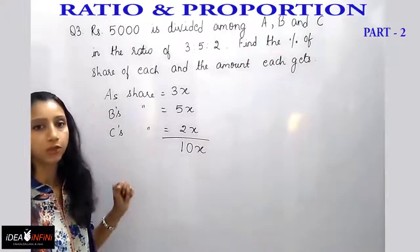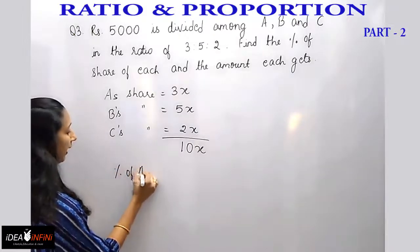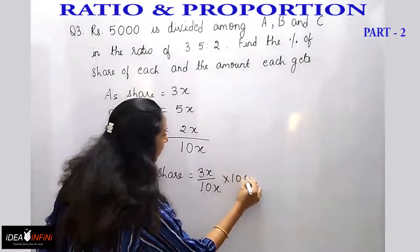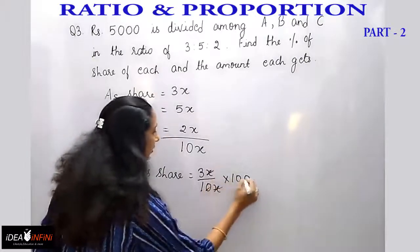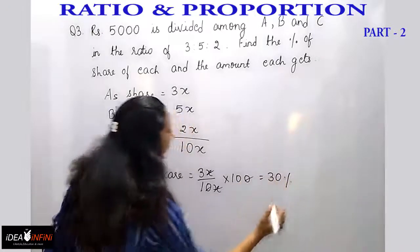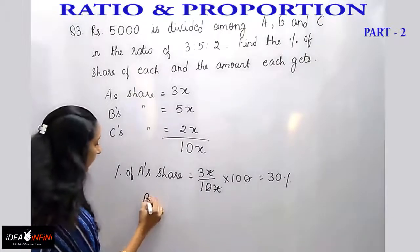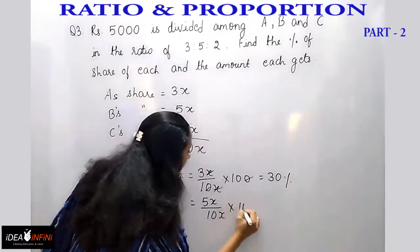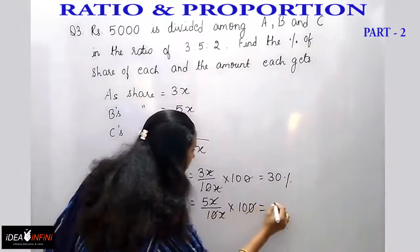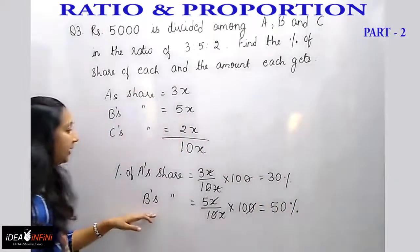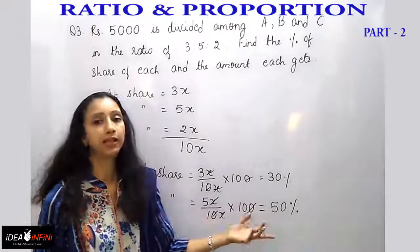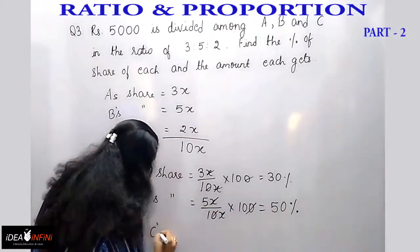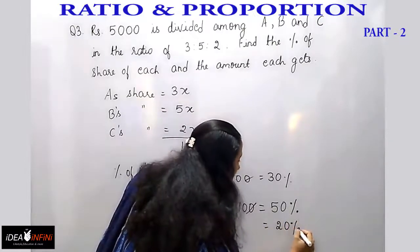The percentage of A's share is 3x upon 10x into 100; x cancels out, giving 30%. B's share is 5x upon 10x into 100; x cancels out, giving 50%. Since A is 30% and B is 50%, that totals 80%, so C's share is 100 minus 80, which is 20%.